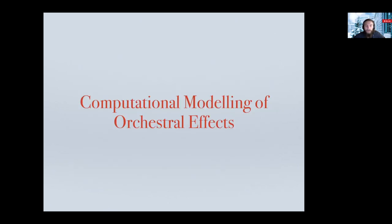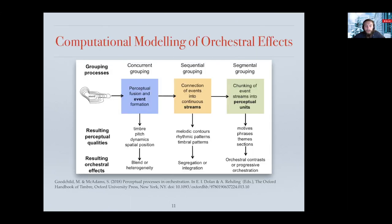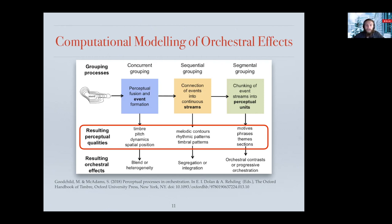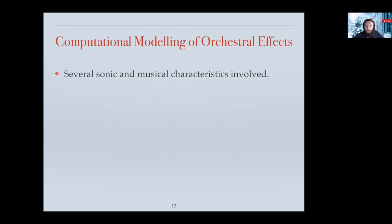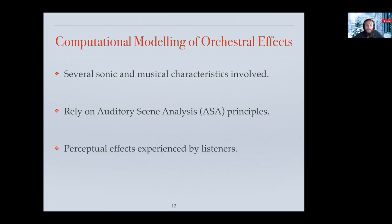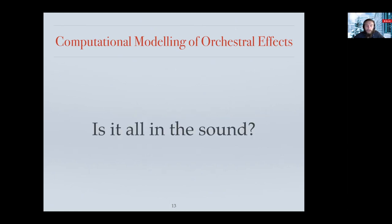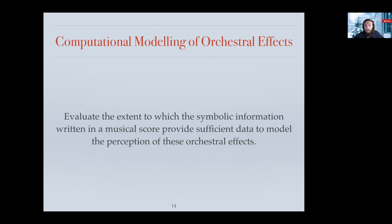So how do we create a computational model of orchestral effects? Research has suggested that several cues contribute to the perception of these effects — sonic and musical characteristics — and it relies on auditory scene analysis principles. These effects are perceived and experienced by listeners, meaning the perception is due to listening to audio or sound. We can see that all of these characteristics are related to sound and auditory processes. So we can ask: is it all in the sound? Or maybe these effects are already present in the musical score, resulting from composers' choices. We wanted to evaluate the extent to which the symbolic information written in a musical score provides sufficient data to model the perception of the orchestral effects mentioned previously.